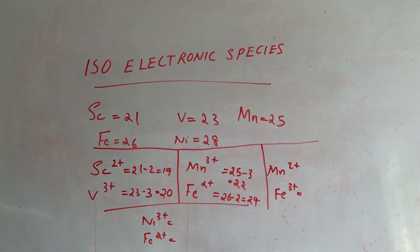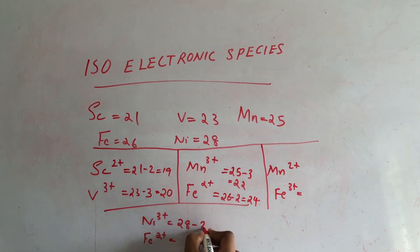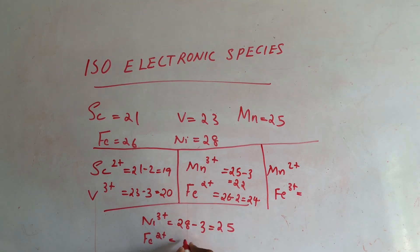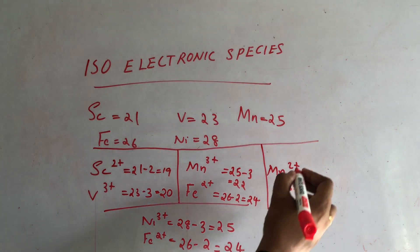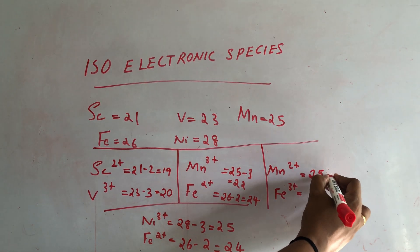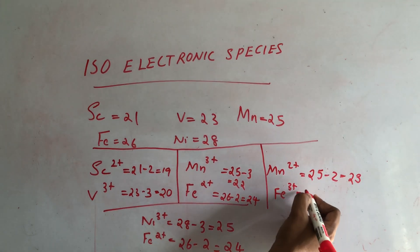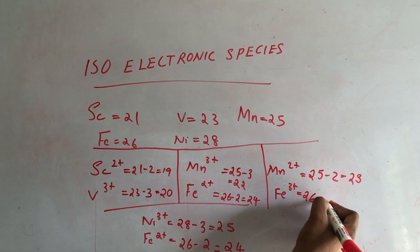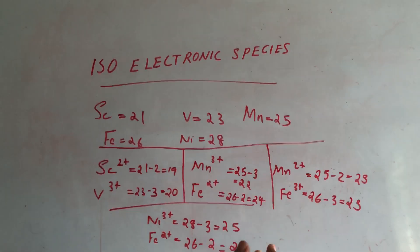Now let's find isoelectronic pairs. Cr3+ is 24 minus 3 equals 21 electrons. Mn2+ is 25 minus 2 equals 23. For Mn2+: 25 minus 2 equals 23, and Fe3+: 26 minus 3 equals 23. These have the same number of electrons, so Mn2+ and Fe3+ are isoelectronic.